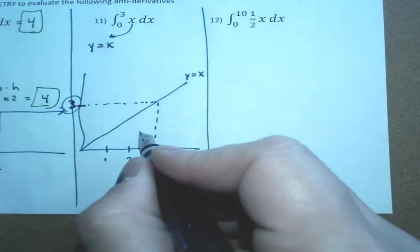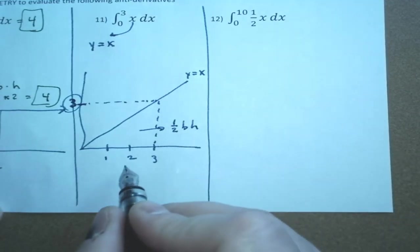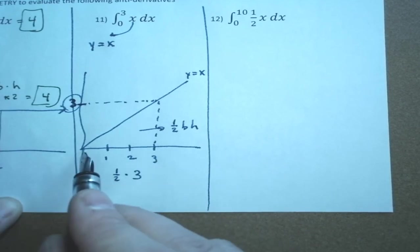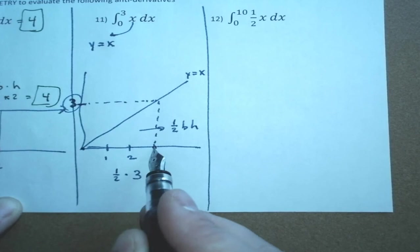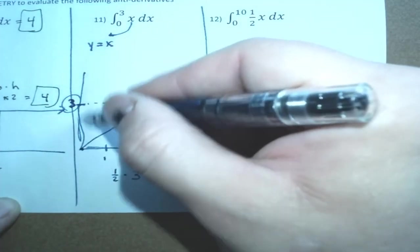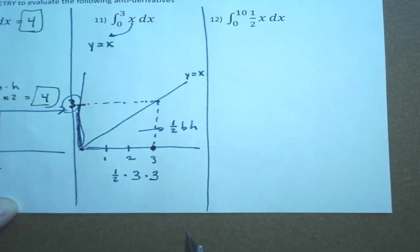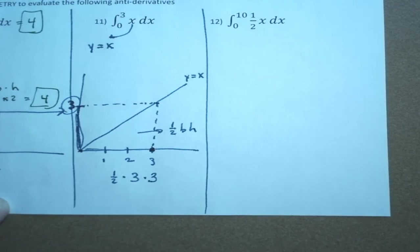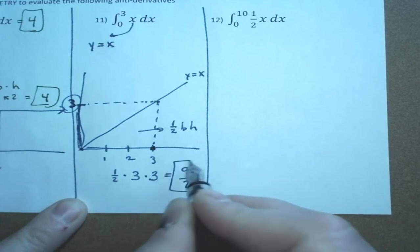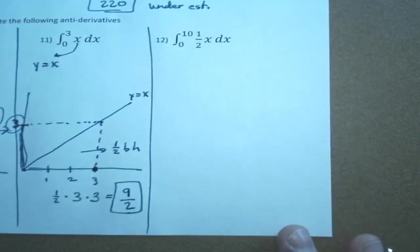So this is a triangle. It's 1 half base times height. So in my case, it's going to be 1 half times the base, which is 3. From here to here, that's the base, it's 3. And then the height is from here to here, or if you want to look at it over here on the y-axis, here to here, which is also 3. So 1 half times 3 times 3. Well, 3 times 3 is 9, and 1 half of 9 is 9 halves. So that would be estimating that one with geometry.